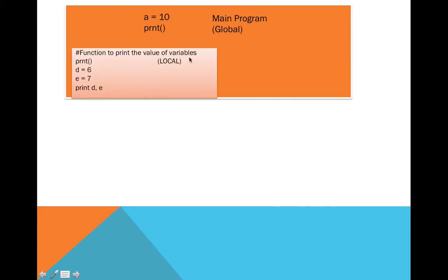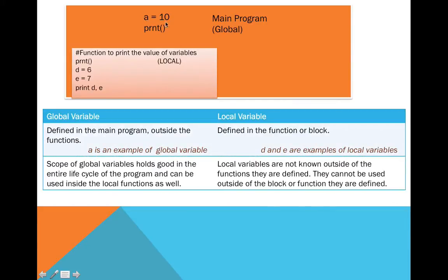The function is considered as the local block. If there is a variable defined in the main program — the global block — outside of the function, it is an example of a global variable. Here, 'a' is a global variable. However, if variables are defined within a function or in the local block, they are local to that function. So in this case, 'd' and 'e' are examples of local variables.